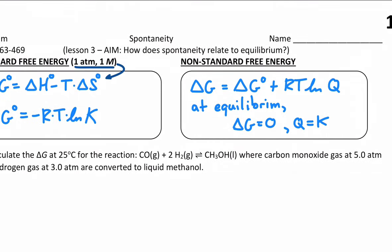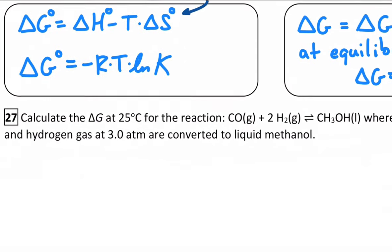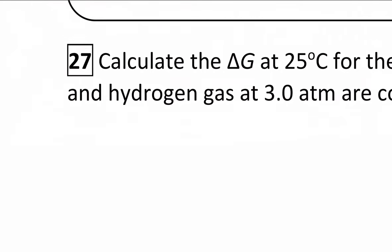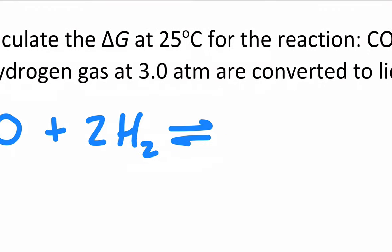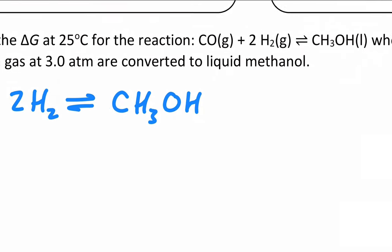So let's look at an example of this and see how we can calculate a non-standard condition and where it's going in terms of being thermodynamically favorable or not. So here we have a reaction. I'm just going to rewrite the reaction for a second. Of carbon monoxide plus two equivalents of hydrogen is in equilibrium with methanol, CH3OH.